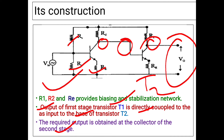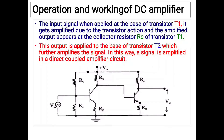The required output is obtained at the collector of the second stage transistor, and from here we will connect this output to our required device. Now we will discuss about the operation and working of the direct coupled amplifier circuit.